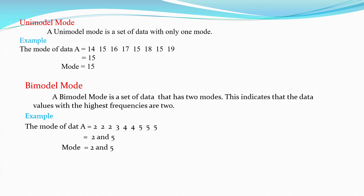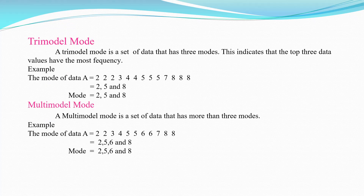A bimodal mode is a set of data that has two modes. This indicates that the two data values have the highest frequencies. Example: the mode of data A = {2, 2, 3, 4, 4, 5, 5, 5}. The repeated values are 2 and 5, so the mode is 2 and 5.